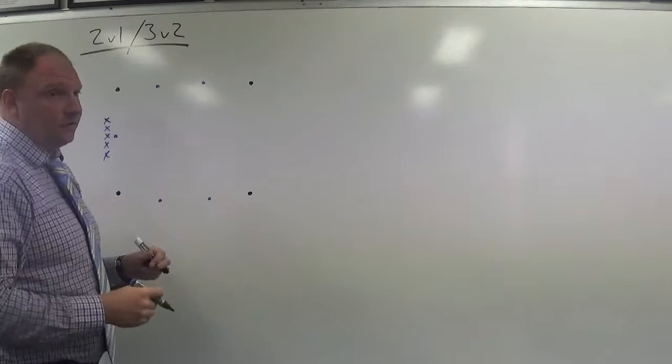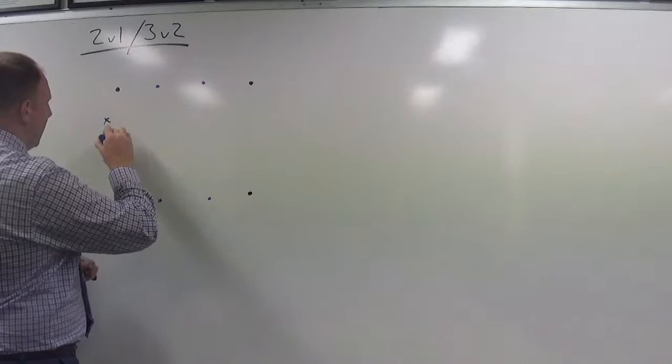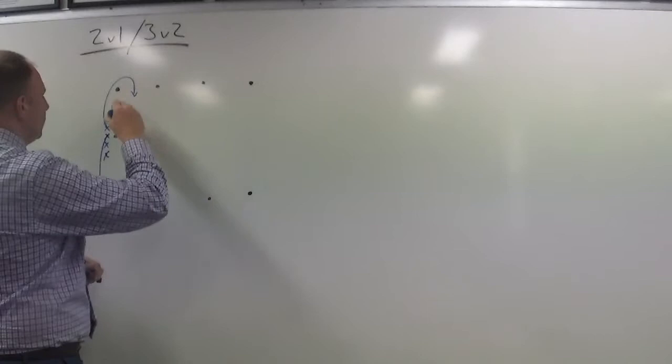Conversely, if our players are doing really well, then we can start to put them under a bit of pressure by restricting width. If the ball carrier decides to come this way, we dictate that they stay in their channel, the first defender stays in their channel, and the second support player stays in their channel.